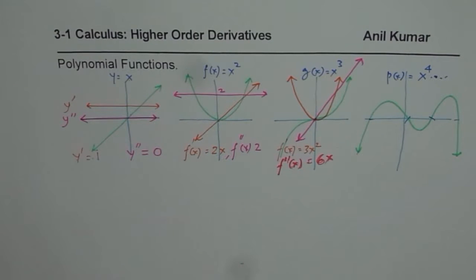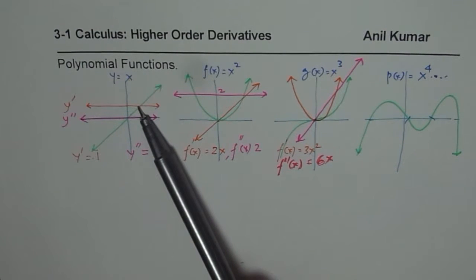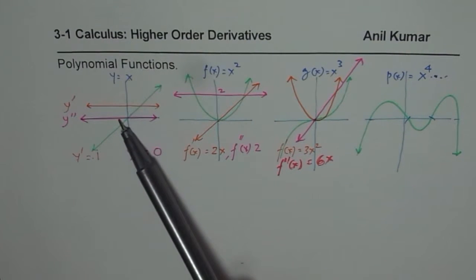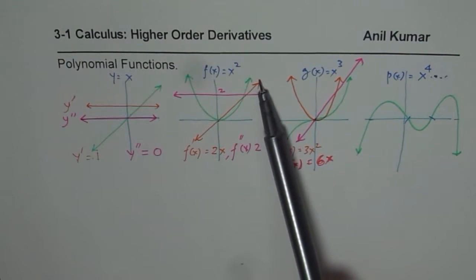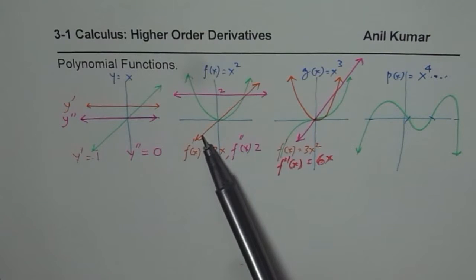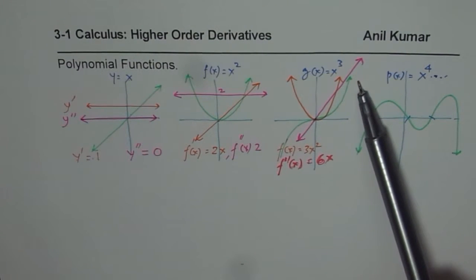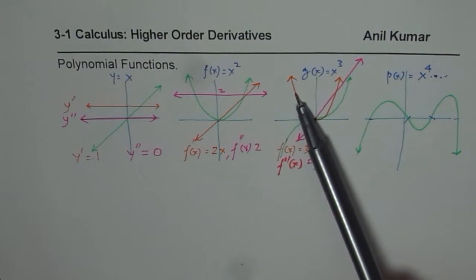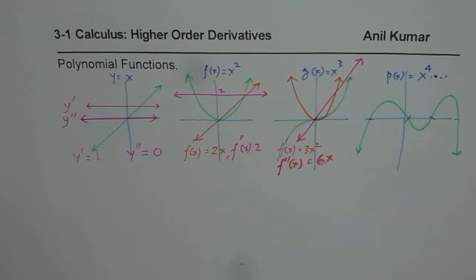So we see that the derivative is one degree lower, and the second derivative is one more degree lower. For a parabola, the derivative is a straight line and the second derivative is a constant function. For a cubic function, the derivative is degree 2 — a parabola — and the second derivative is degree 1, a straight line.